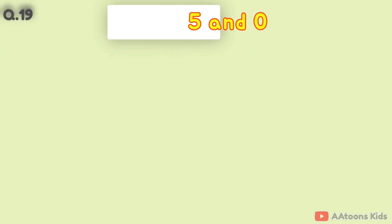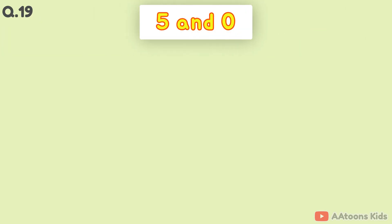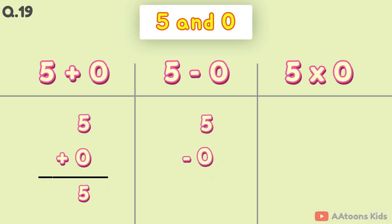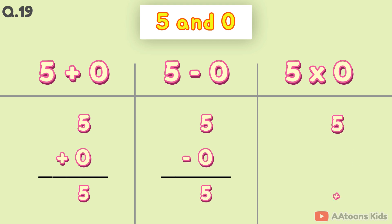The two numbers are 5 and 0. 5 plus 0 is 5. 5 minus 0 is 5. 5 times 0 is 0.